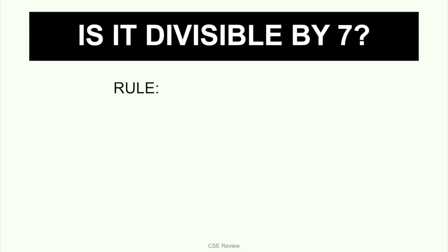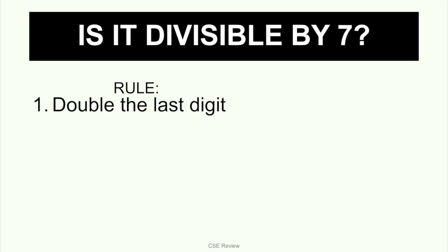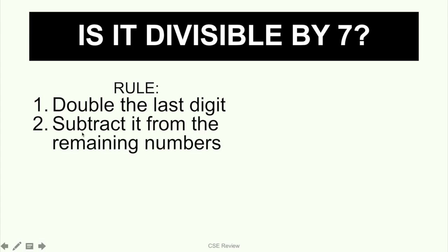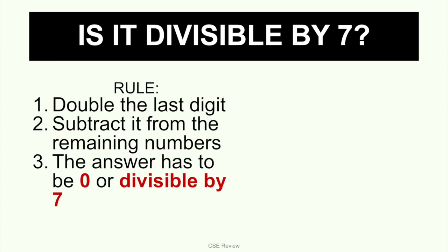Here is the rule for divisibility by 7 — there are three steps. Number 1: double the last digit, so whatever the last digit is, multiply it by 2. Number 2: subtract that result from the remaining digits. Number 3: the answer has to be 0 or divisible by 7. Basically, the difference has to be divisible by 7. Let me show you using some of the numbers from our little exercise.